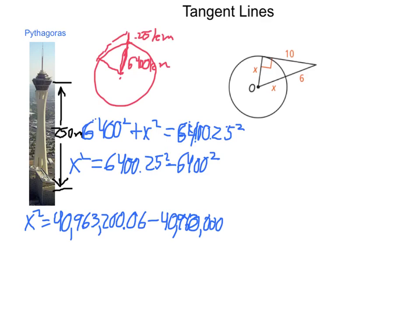So going through and subtracting, x squared will equal 3,200.06. Then taking the square root of this figure gives us that the distance we can see out from the top of that observation platform to be approximately 56.6 kilometers.